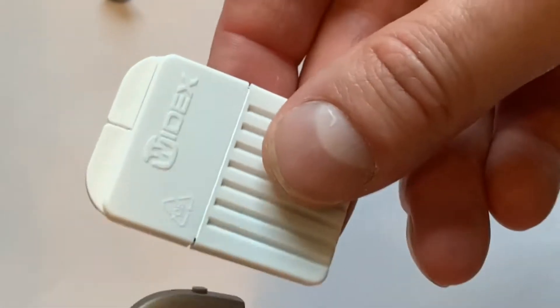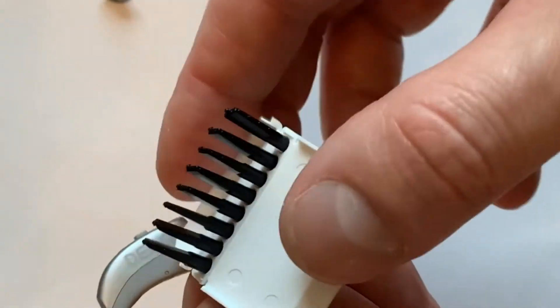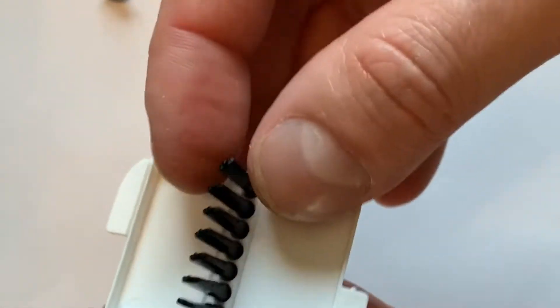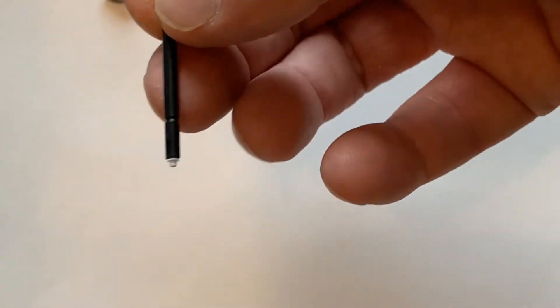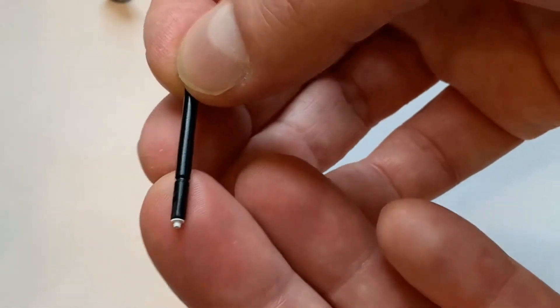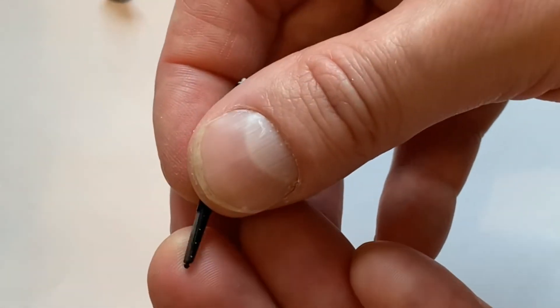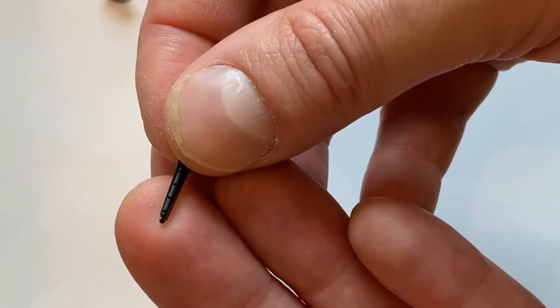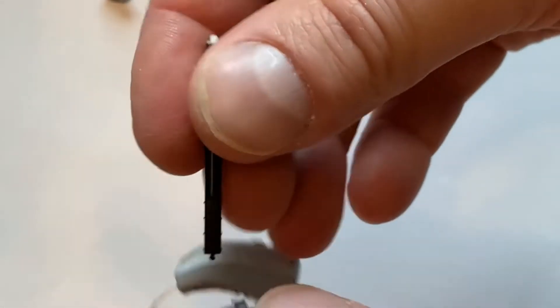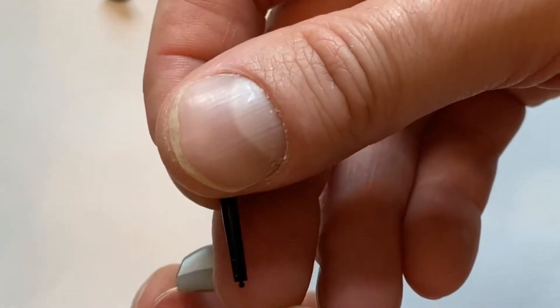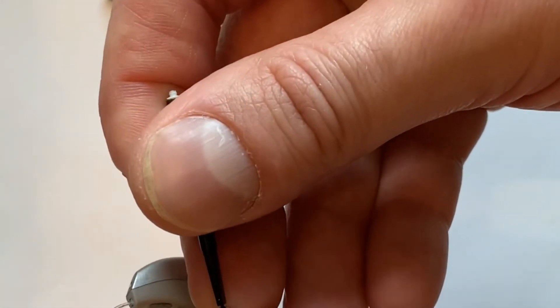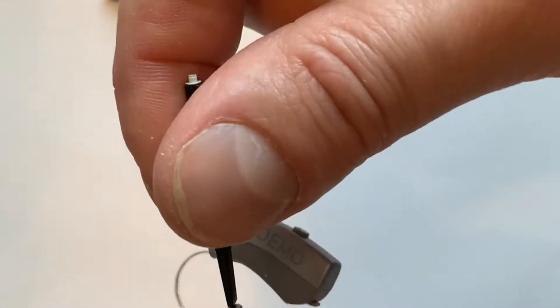So what we're going to do is we're going to grab our package of replacement wax guards and inside we have eight black sticks. We're going to take one of those sticks out and what we have sitting on the end is a white filter. And on the other end, we have a little hook that has two barbs on it and that's what we use to remove it. So we want to stick that barb straight into the end, into the center of it.